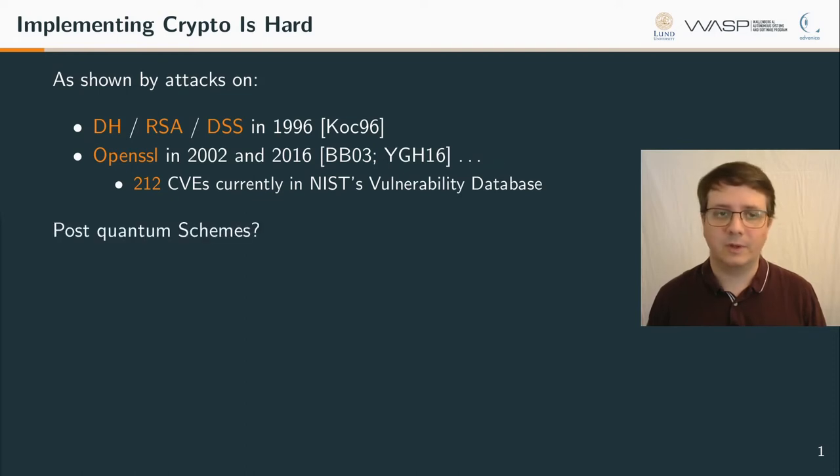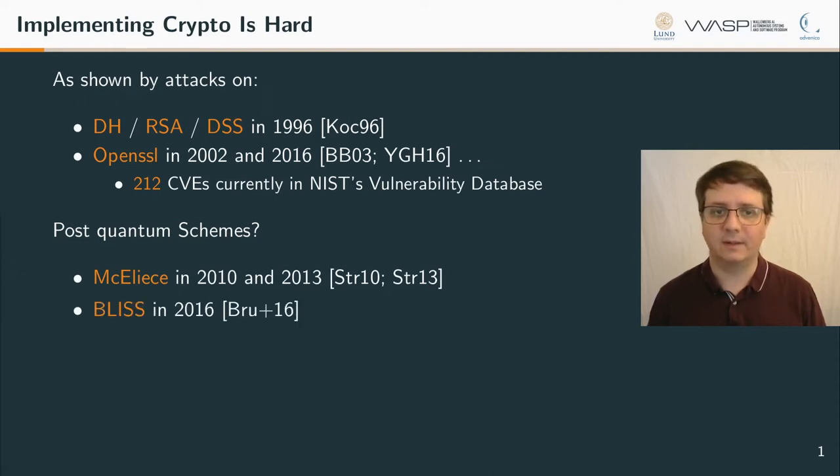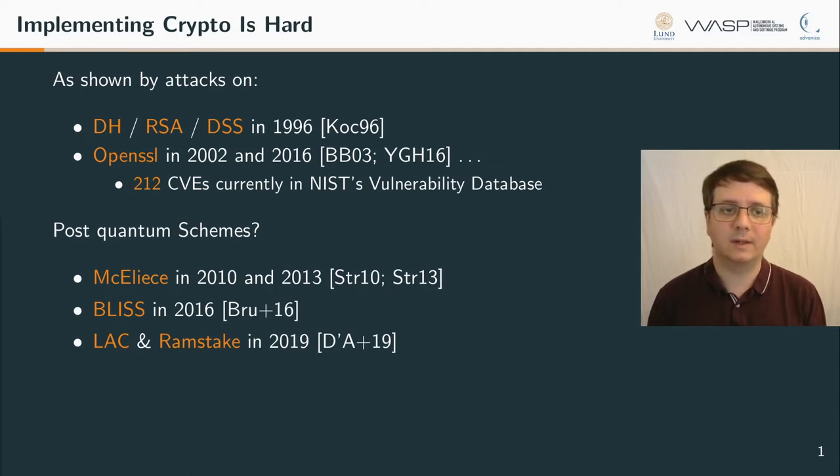This disconnect between the theoretical and mathematical models and on-silicon behavior brings us to our first observation: implementing crypto is hard. We know this because over the years many so-called side-channel attacks have surfaced. We have the first side-channel attack on RSA and Diffie-Hellman dating as far back as 1996 and OpenSSL has been attacked again and again.